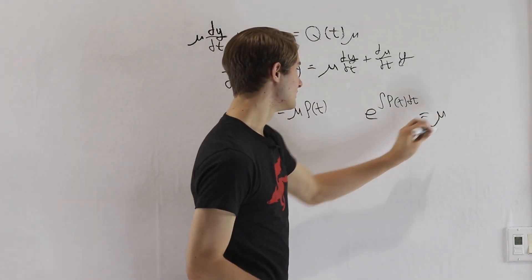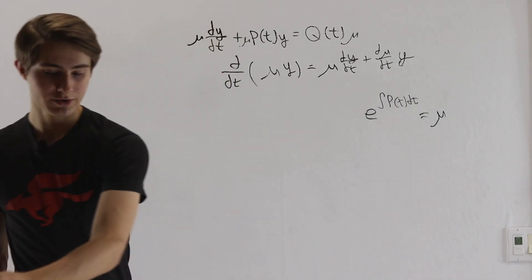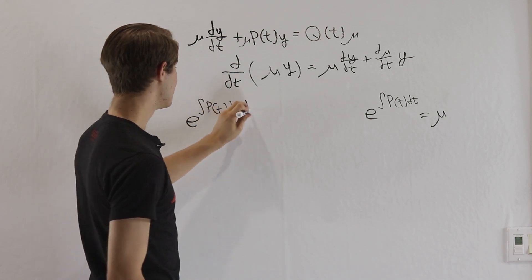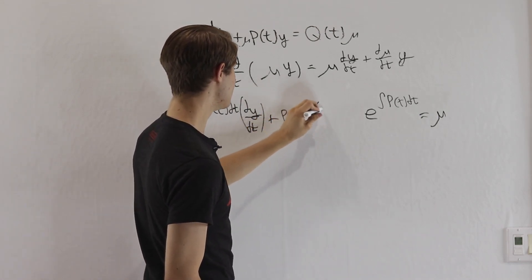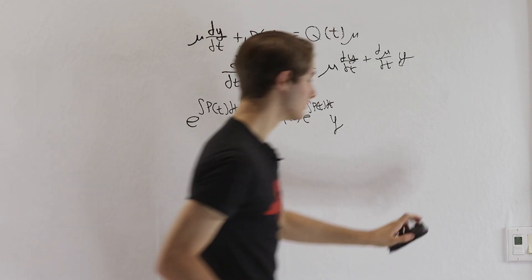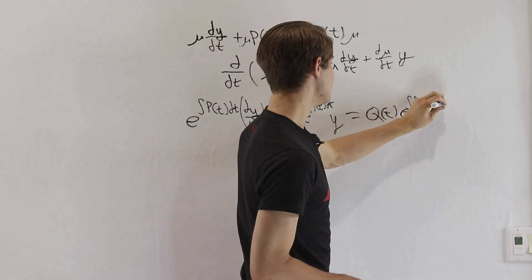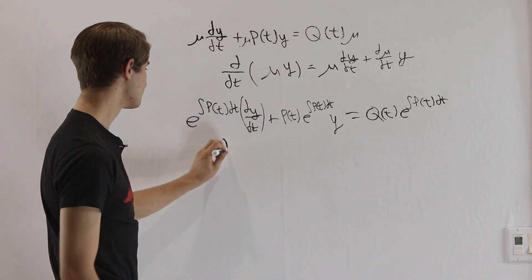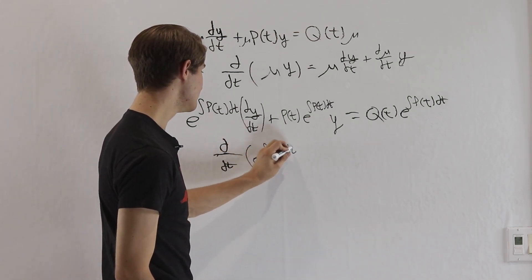So this is going to be the definition of our function mu, and we multiply that through the whole equation. We get the equation in the form of e to the integral of p(t) dt times dy/dt, plus p(t) times e to the integral of p(t) dt times y. The left side has turned into the product rule, so we can write it as the derivative with respect to t of e to the integral of p(t) dt times y.